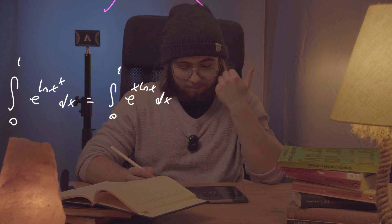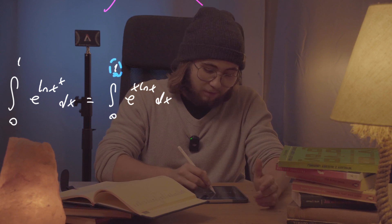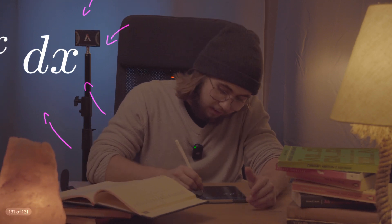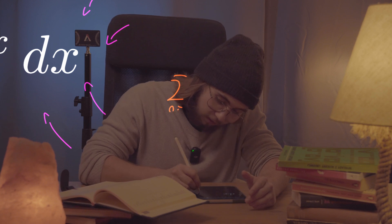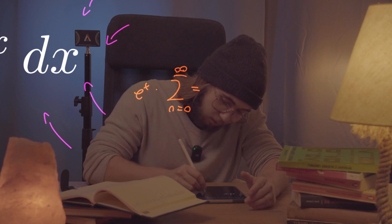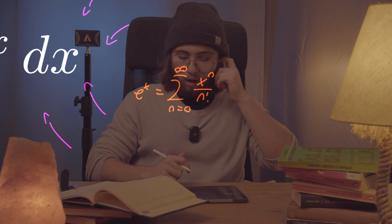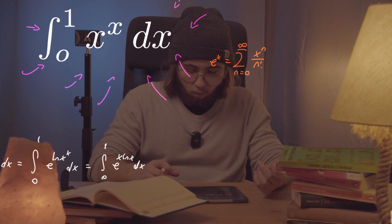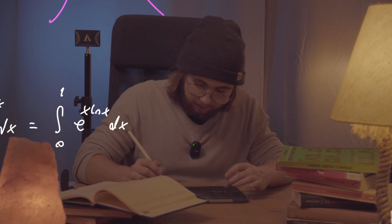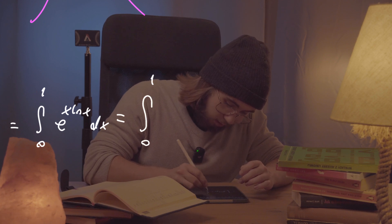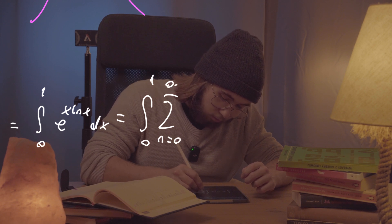But now, what are we supposed to do with this? We got it to look maybe a little bit better, but how are we supposed to proceed further? There is a beautiful trick: you probably remember the power series expansion for e to the power of x, which is equal to the sum from n equals 0 to infinity of x to the power of n all over n factorial.